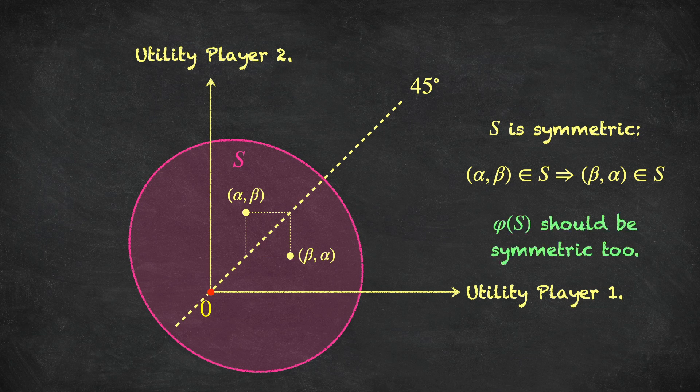The symmetry axiom simply asks that in symmetric games, the solution phi of S should be symmetric too. Graphically, this means the solution lies somewhere along the 45-degree line. Notice that for games that are not symmetric, this axiom has no bite at all — we're not imposing symmetric solutions on asymmetric games. We're simply saying: when the game is symmetric, the solution should be symmetric too.